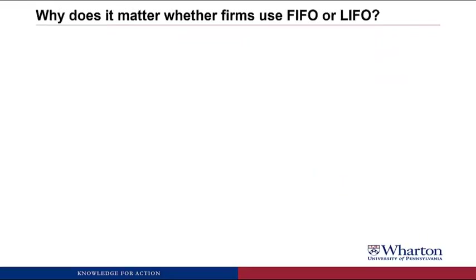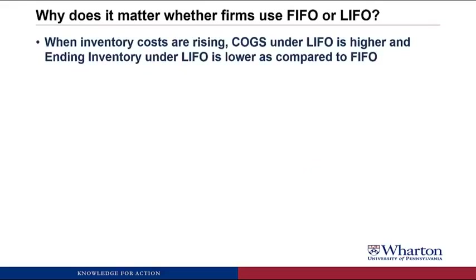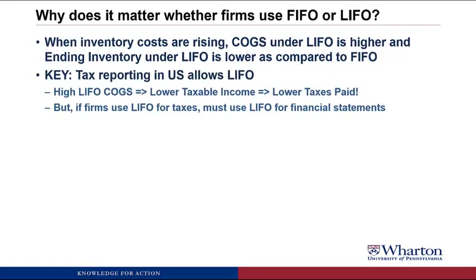Let's talk about why it would matter whether a company uses LIFO or FIFO. When inventory costs are rising — which is generally the case because of inflation — Cost of Goods Sold under LIFO is higher and ending inventory under LIFO is lower compared to under FIFO. In the US, tax reporting allows companies to use LIFO. So if you have higher COGS under LIFO, you have lower taxable income, which means you pay less in taxes. But the rule is that if you use LIFO for your taxes, you have to use LIFO for your financial statements as well — it's called the Tax Conformity Rule, one of the few places where tax reporting and financial reporting must match up.